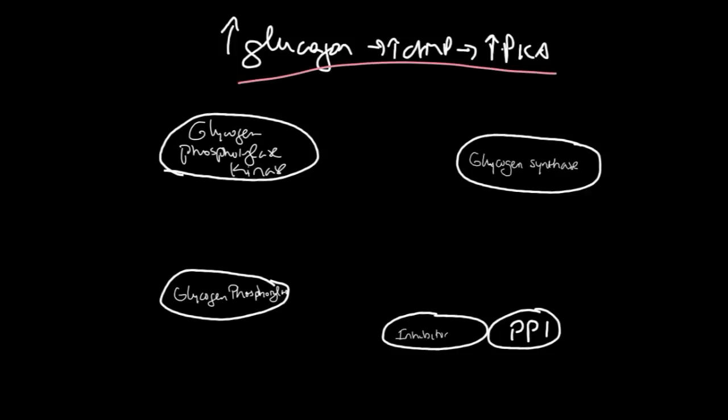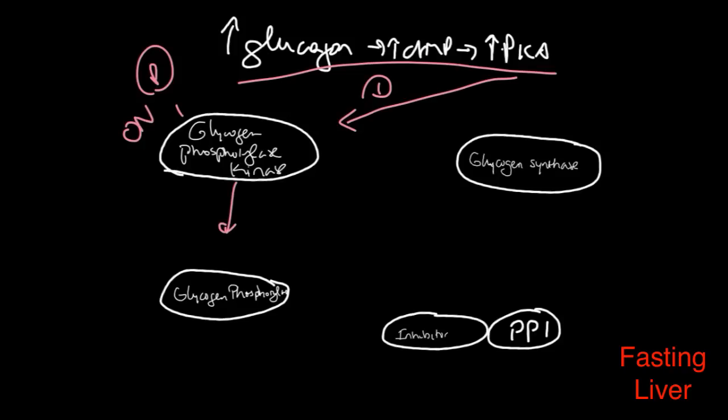During fasting, PKA is going to do three things. The first thing it's going to do is phosphorylate glycogen phosphorylase kinase, turning it on. That will phosphorylate glycogen phosphorylase, or as I call this, the Pac-Man enzyme. And it gets turned on.